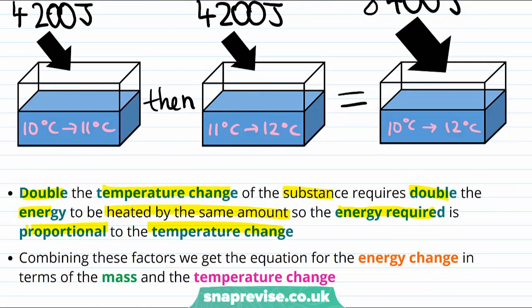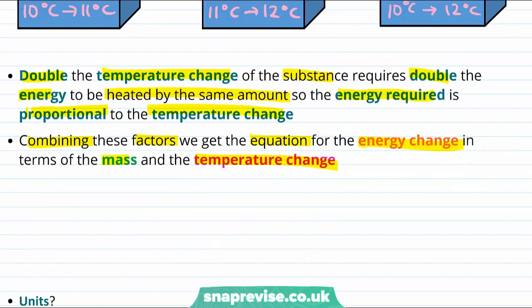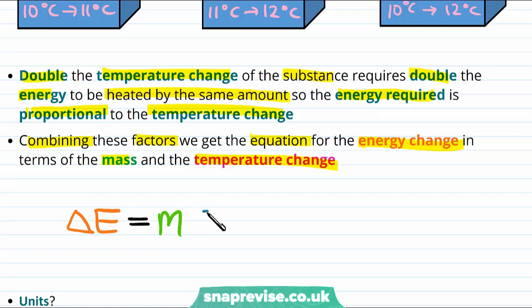Altogether, the energy required will increase when the mass increases, when the temperature change needed increases, or when the specific heat capacity increases. Combining these factors together, we get our equation: the change in energy required to heat a substance is equal to the mass of the substance multiplied by the specific heat capacity, multiplied by the change in temperature.